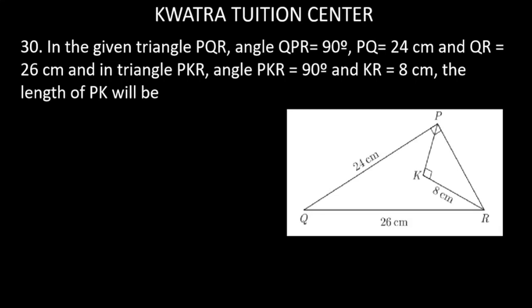Let's start with question number 30. In the given triangle PQR, angle QPR is 90 degrees. PQ is 24 cm, this is mentioned. QR is 26 cm, and in triangle PKR, the other triangle is given within the same triangle and there is a 90 degree angle PKR, and the value of KR is 8 cm. We have to find the length of PK in this case.